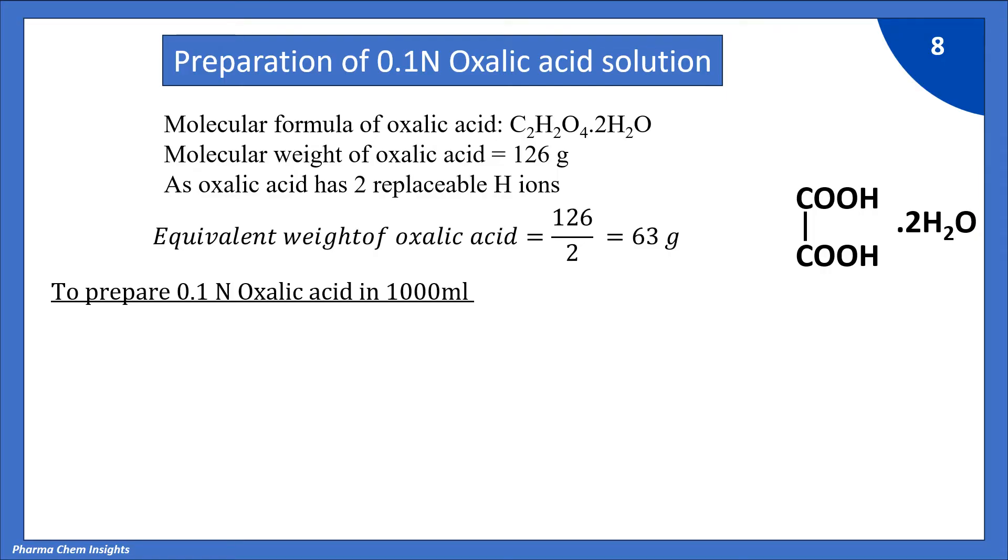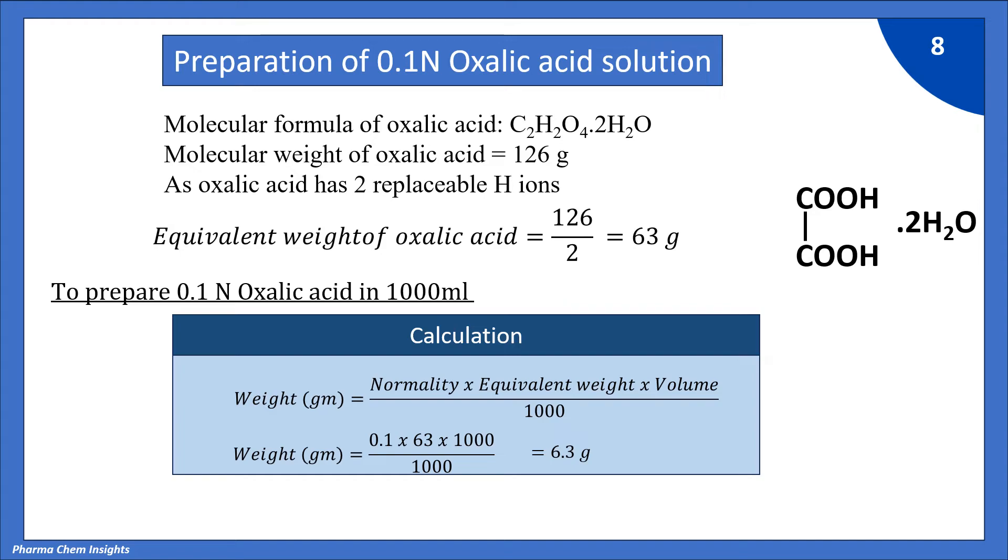So to prepare 0.1 normal oxalic acid in 1000 ml. We have formula for normality weight in gram is equal to normality into equivalent weight into volume to be prepared divided by 1000. So by putting the values normality is 0.1. Equivalent weight is 63 and volume to be prepared by 1000. So by calculation we get 6.3 gram. Hence 6.3 gram of oxalic acid dissolved in 1000 ml of water gives you 0.1 normal oxalic acid solution.